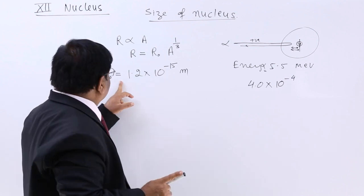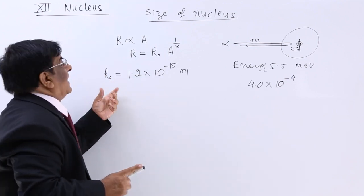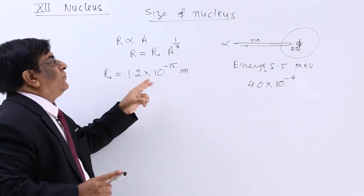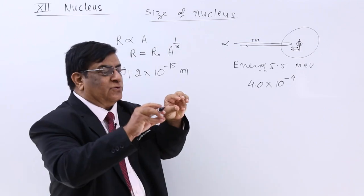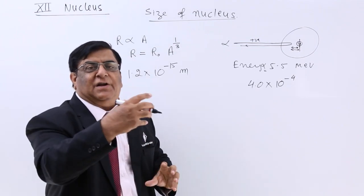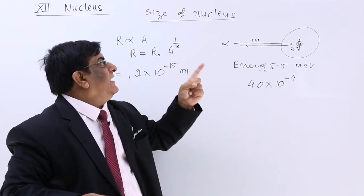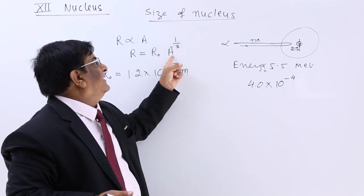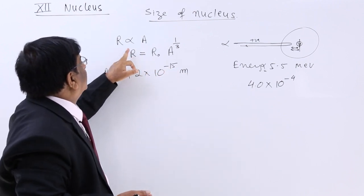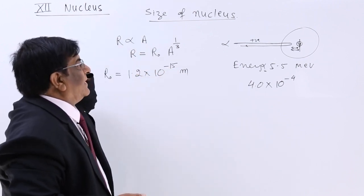So from this, if there are two particles, if there are three particles, if there are four particles, the mass will go on increasing. The atomic mass number will go on increasing. That is why radius is proportionate to atomic mass number.